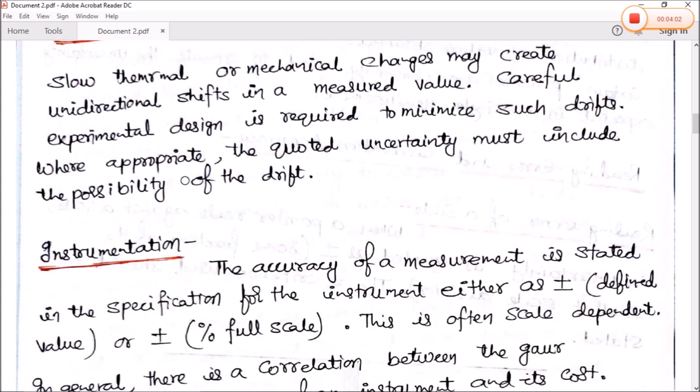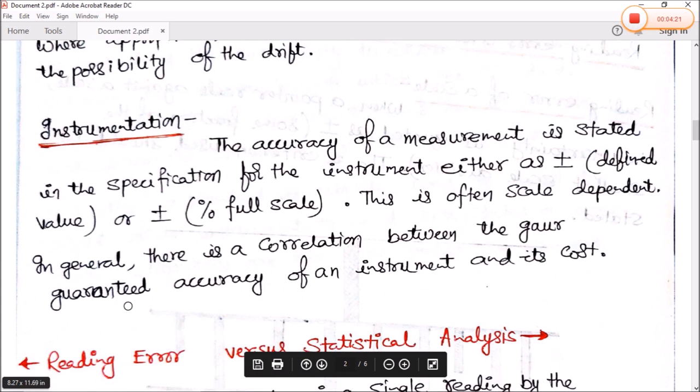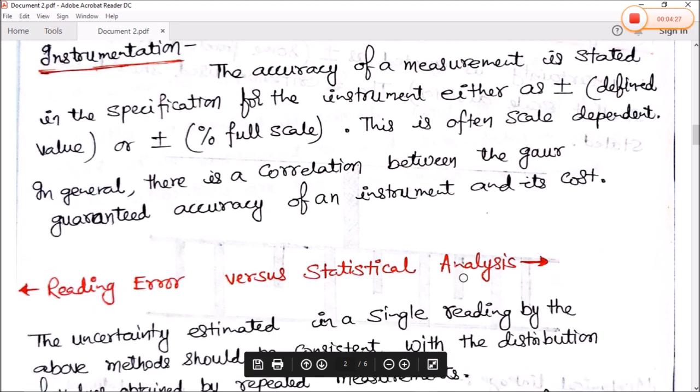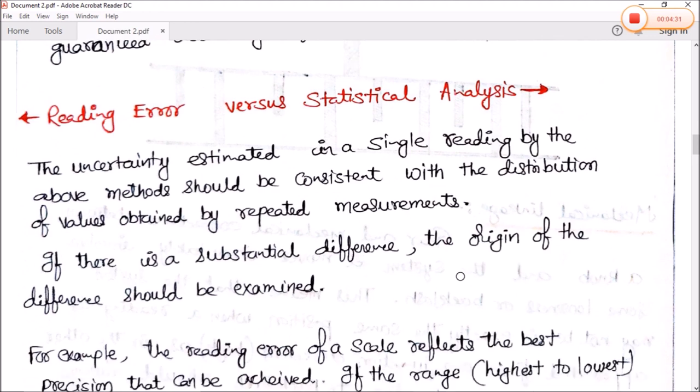Next is instrumentation. The accuracy of measurement is stated in the specification for the instrument either as plus minus defined value or plus minus percentage full scale. This is often skill dependent. In general there is a correlation between the guaranteed accuracy of the instrument and its cost.